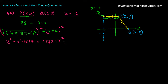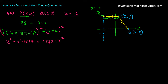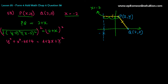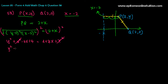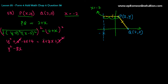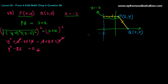Now shift everything to one side. The x squared terms cancel. That leaves y squared minus 4x plus 4 — then bringing over the 4x and 4 from the right side gives minus 8x, and the 4s cancel. So the equation of the locus of point P is y squared minus 8x equals 0.